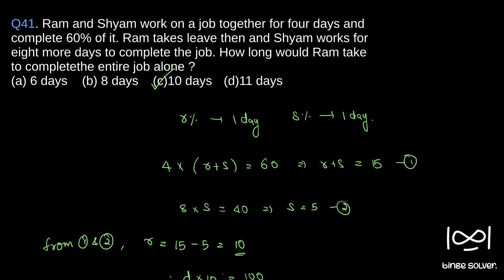Here we assumed percentages only. When we say R equals 10, we mean Ram works 10 percentage of work in one day. When we got S equals 5, that means Shyam does 5 percentage of work in one day. If the question was how long would Shyam take to complete the entire job, d into 5 equals 100, so d equals 20. Shyam alone will take 20 days to complete. Solution to question 41 is C, 10 days — Ram will take 10 days to complete the entire job alone.